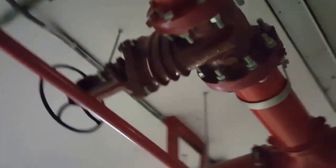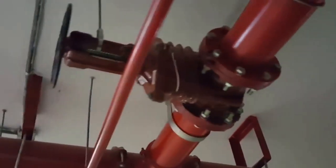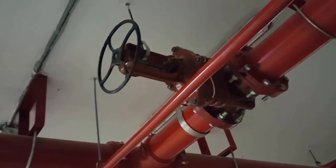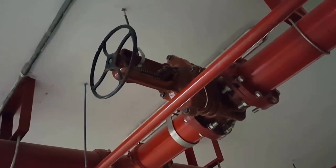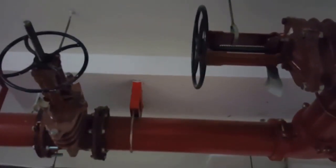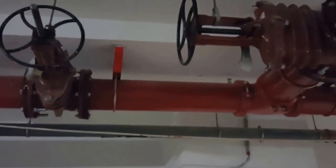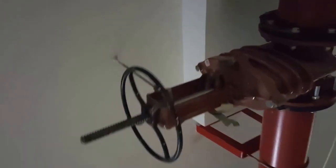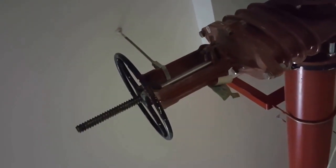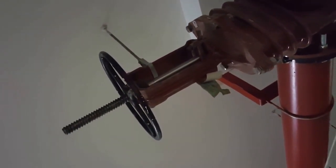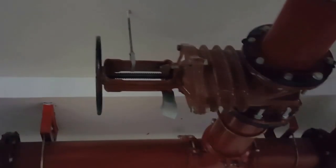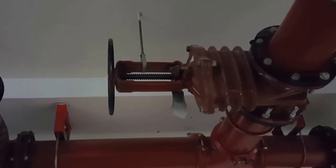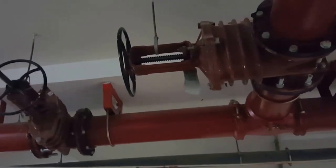This is an OS&Y valve that functions like a gate valve. See here, this valve rod is going up. When the rod is coming out from the lever it means this is open. When this rod is not coming from the lever, the pipe is closed, so the gate valve is closed.